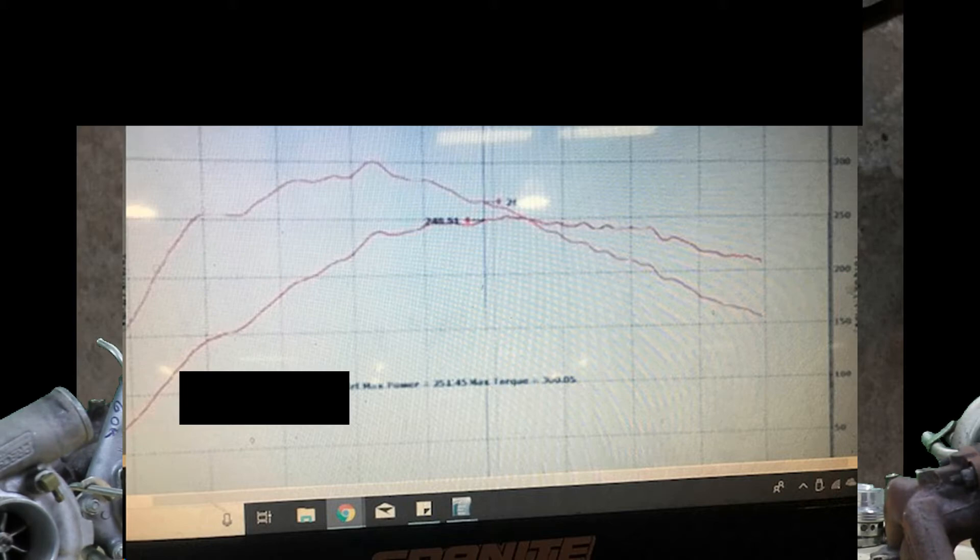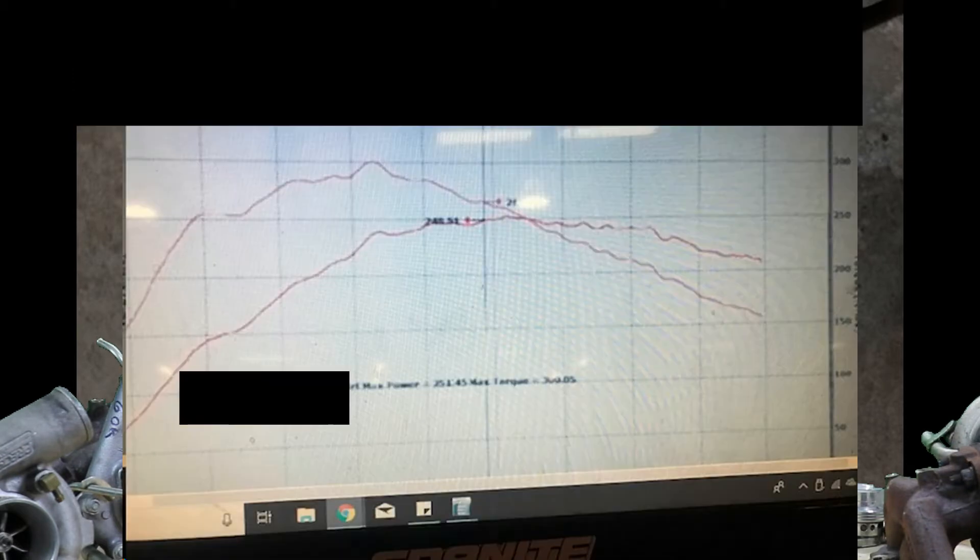When the torque curve drops off that drastically, you also get a horsepower drop. Because I just said, horsepower is a result of torque. This car made 251 horsepower peak horsepower. But if you look at red line, this car is only making like 210 horsepower. You're losing 40 horsepower between that peak horsepower mark and red line. That's a huge loss.